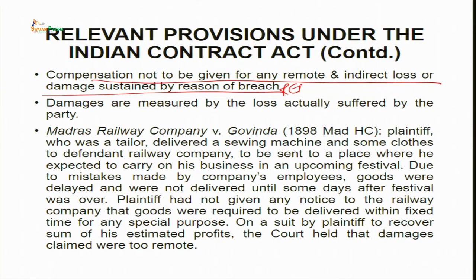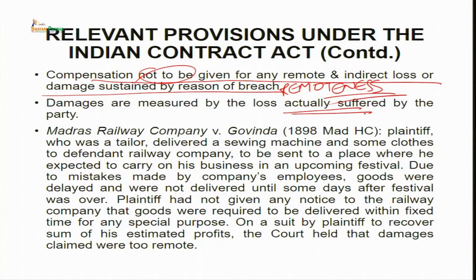From Hadley versus Baxendale: damages which the other party ought to receive in respect of breach of contract should be either such as may reasonably and fairly be considered as arising naturally (general damages), or such as may reasonably be supposed to have been in the contemplation of both parties at the time they made the contract as the probable result of the breach (special damages). Compensation is not to be given for remote and indirect loss - damages are measured by the loss actually suffered.